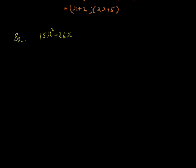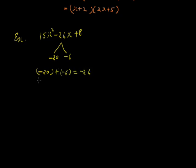Let's see some more examples: 15x squared minus 26x plus 8. We have to split 26 into two numbers such that their sum is 26 and their product equals 15 into 8, that is 120. The two factors are minus 20 and minus 6, because minus 20 plus minus 6 gives minus 26, and minus 20 into minus 6 gives plus 120. So the condition is satisfied and we can split minus 26x into minus 20x and minus 6x.